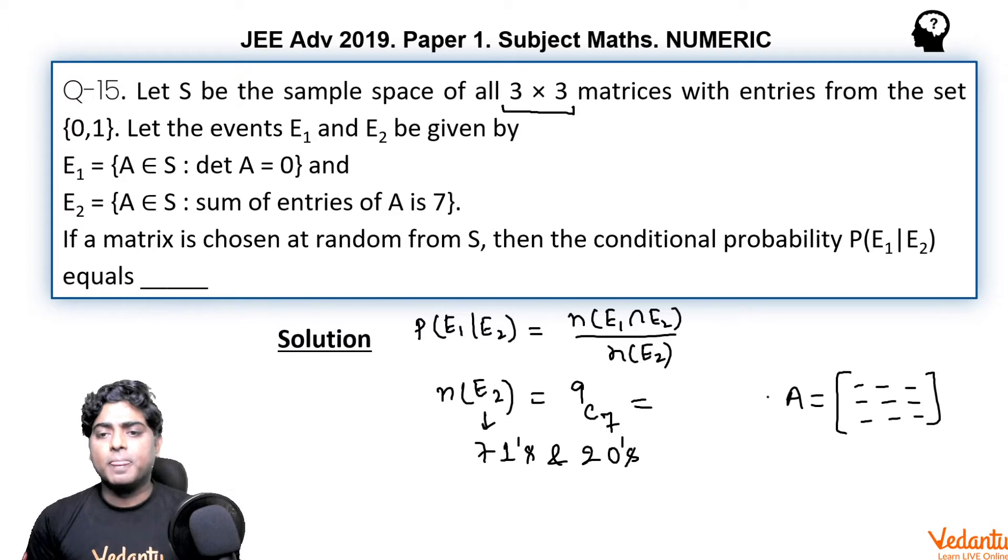We should write 9C7 or 9C2. I am writing 9C7. So the value is 9 into 8 by 2, that is 36. So N(E2) is 36.